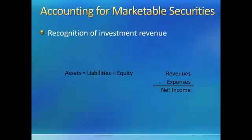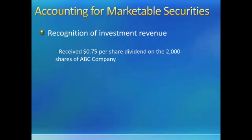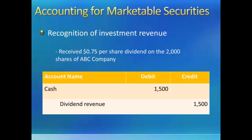Next, we have the recognition of investment revenue. In this example, we received $0.75 per share dividend on the 2,000 shares of ABC Company. Since we're receiving cash because we own the stock of another company, asset cash goes up. The dividend is a revenue, so revenues go up, which makes net income go up and equity increase as well. The journal entry shows a debit to cash for $1,500 — that's $0.75 per share times 2,000 shares — and a credit to dividend revenue for the same amount of $1,500.